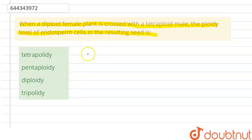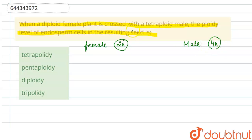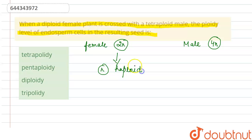The female is diploid, meaning it has 2N — two sets of chromosomes. The male is tetraploid, meaning it has four sets of chromosomes. After undergoing meiotic division, which is a reductional division, the female gametes will be haploid — having half the number of chromosomes — and the male gametes will also be reduced to half, which is 2N.